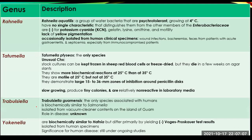Rahnella aquatilis is a group of water bacteria that are psychrotolerant and can grow at 4 degrees Celsius. They have no single characteristic that distinguishes them from other members of the Enterobacteriaceae. They are negative for potassium cyanide, gelatin, lysine, ornithine, and motility, and they lack yellow pigmentation. They are occasionally isolated from human clinical specimens, including bacteremias, feces from patients with acute gastroenteritis, and septicemia, especially from immunocompromised patients.